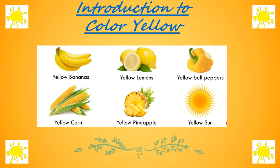I have this flash card over here for you which has very common yellow color objects. Yellow bananas — I know you all like bananas. Then there are some sour yellow lemons. We also have yellow bell pepper and some yummy yellow corn. And I love yellow pineapple. And every day that shines in the sky, our very favorite yellow sun.